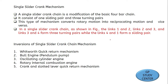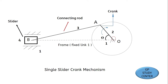In this lecture we are going to study inversion of single slider crank chain mechanism. Single slider crank chain mechanism is a modification of four bar chain mechanism. In four bar chain mechanism there are four links and all four kinematic links form four turning pairs. In single slider crank chain mechanism there are three turning pairs and one sliding pair. This mechanism is used to convert rotary motion into reciprocating motion and reciprocating motion into rotary motion.